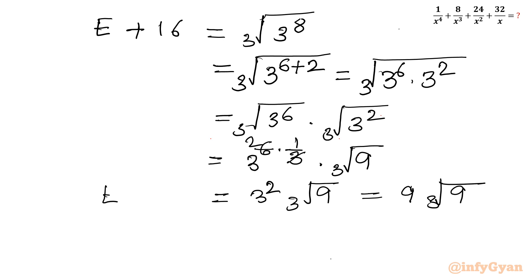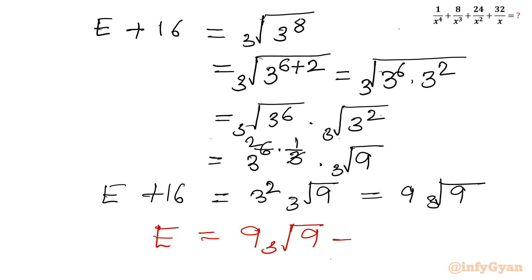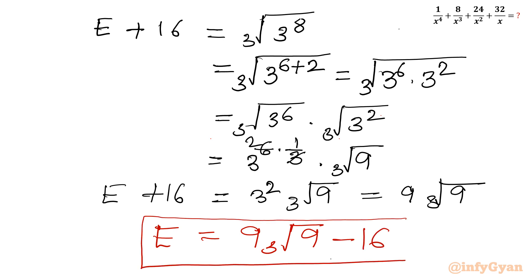The left-hand side is E + 16, which equals 9 times cube root of 9. Taking 16 from both sides, the expression E equals 9 times cube root of 9 minus 16. This is our final and ultimate answer. I hope friends this video was meaningful to you. Do not forget to like, share, and subscribe. Bye, till next video.